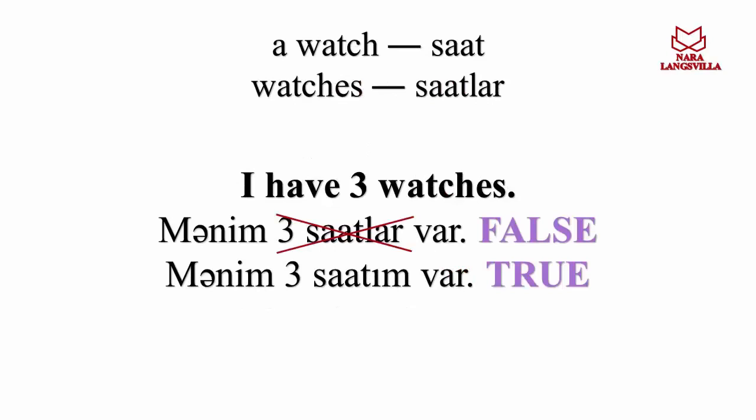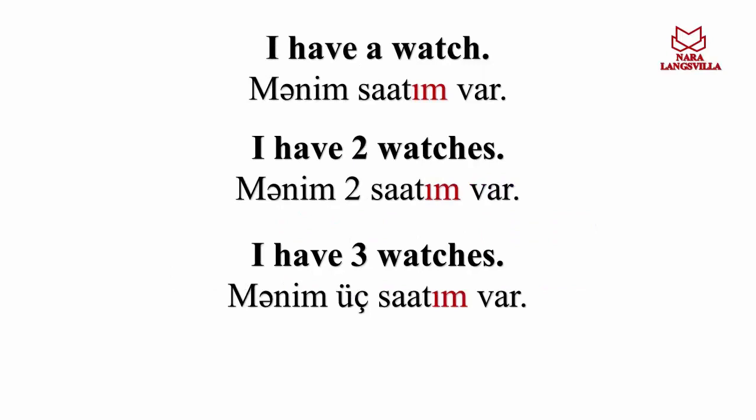A watch — saat. Watches — saatlar. I have three watches — mənim üç saatım var. I have two watches — mənim iki saatım var. I have three watches — mənim üç saatım var. We changed the numerals, but we don't need to do any change in the word root or suffixes.